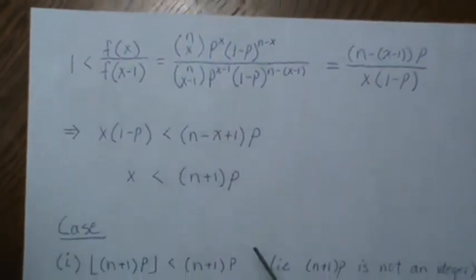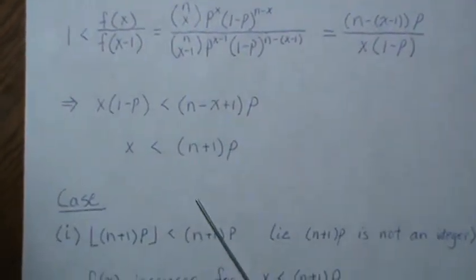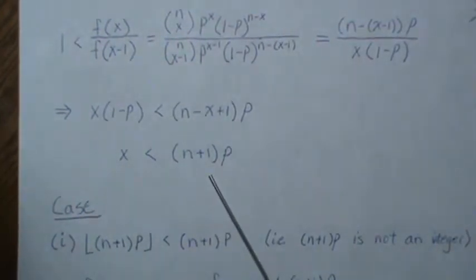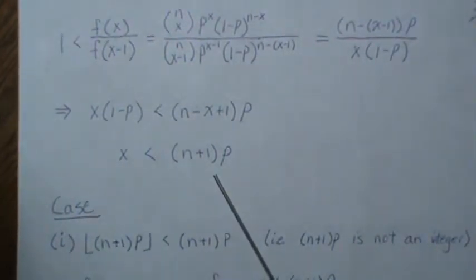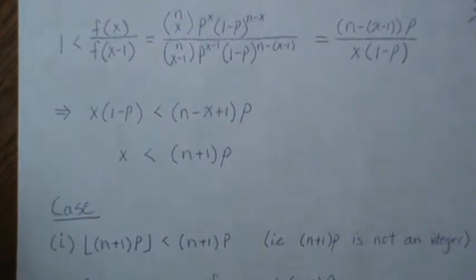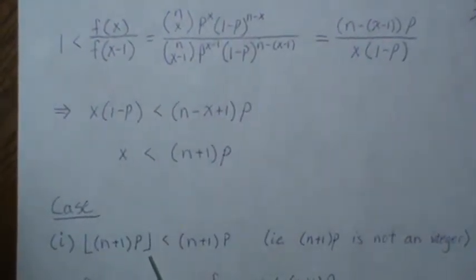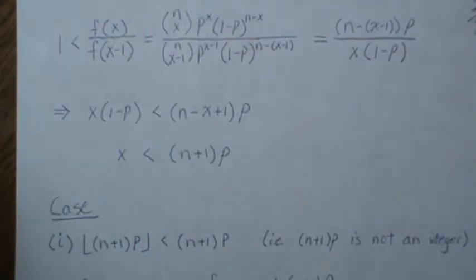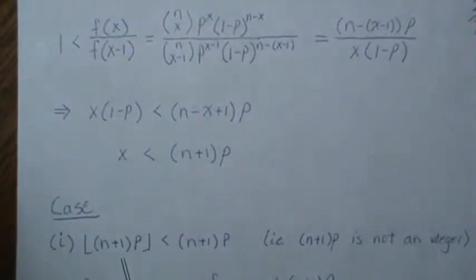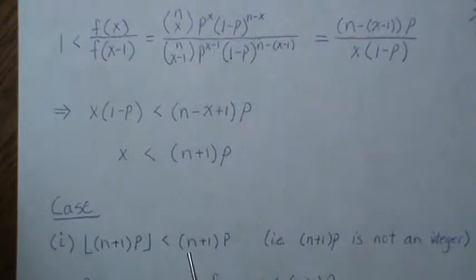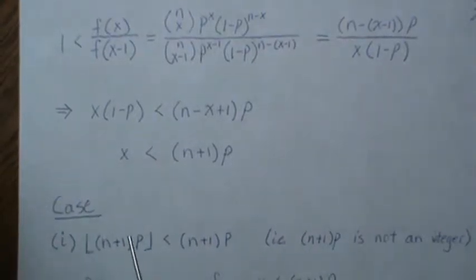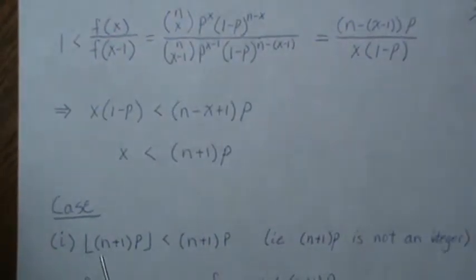And so there's two cases: if (n+1)p is an integer or not an integer. And so these brackets here, it looks like an L and a backwards L. That means take the lowest possible integer of this. Get rid of the fractional part. And it's called a floor function.